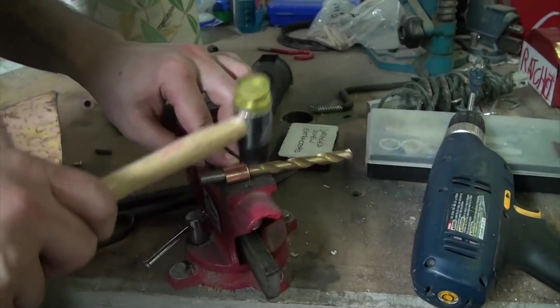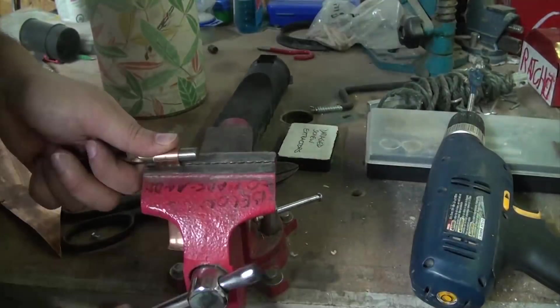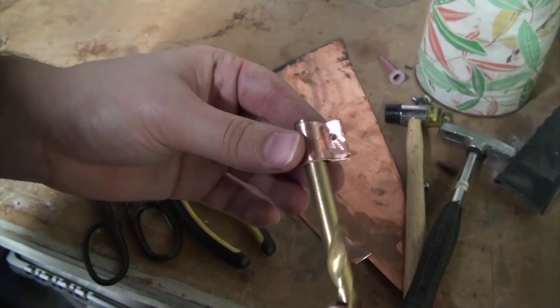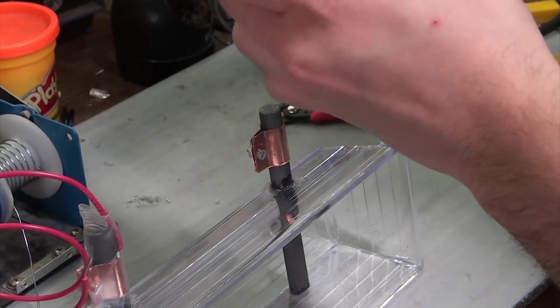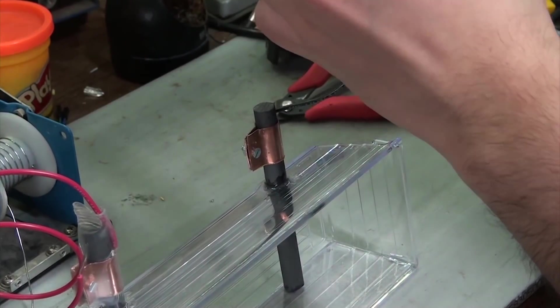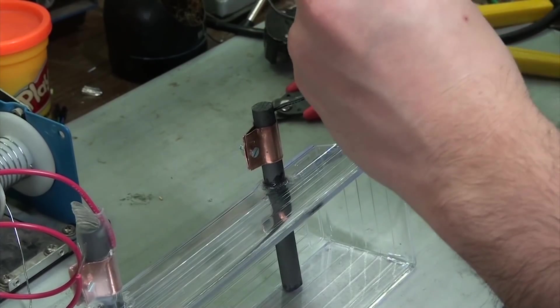While that was curing, I used a bit of scrap copper to make two conductive brackets for connecting some wires to the rods. Once the epoxy was fully cured, I added the brackets and used them to attach a wire to each rod, then bolted everything together tightly.